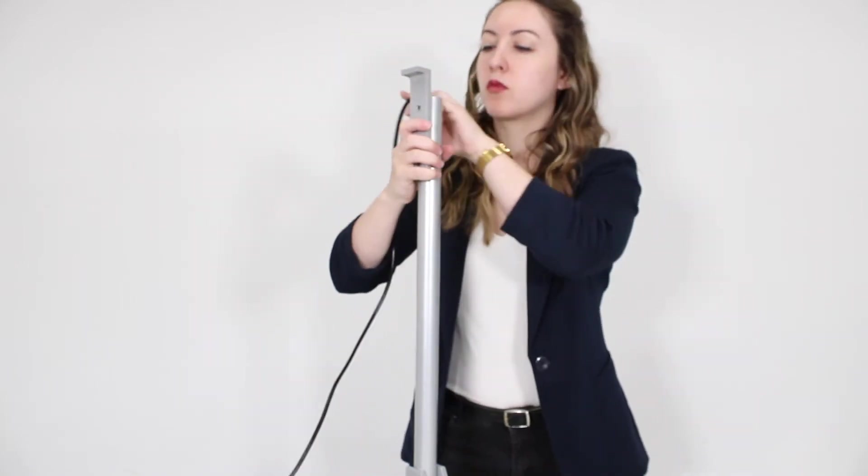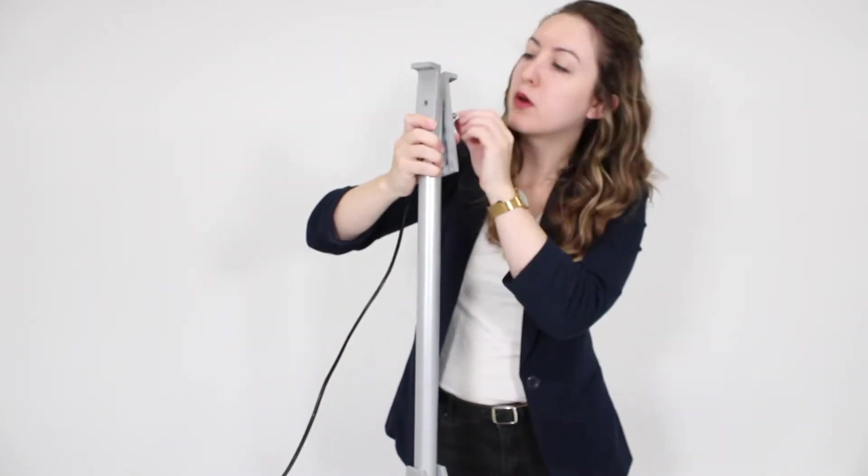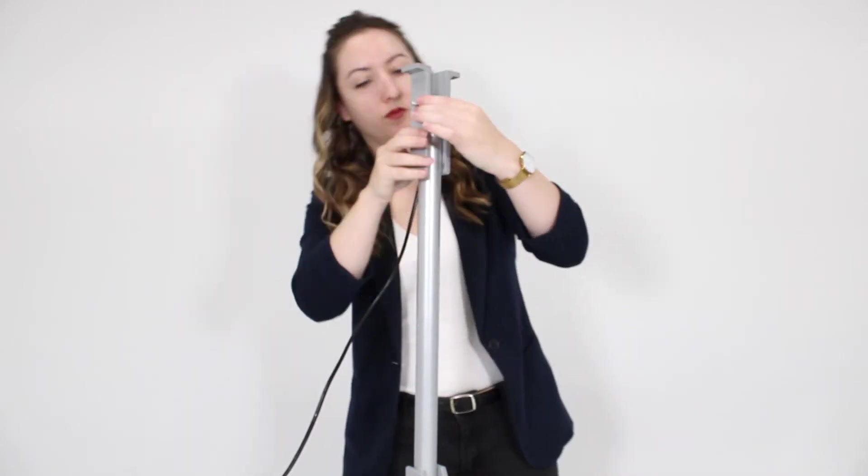Next we can install the upper L brackets on the tube with the same set of fasteners. Extra nuts are provided in the bag in case you need them.